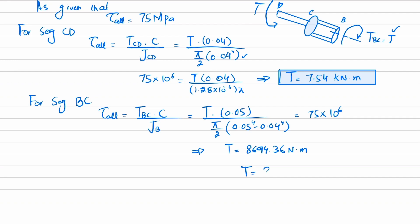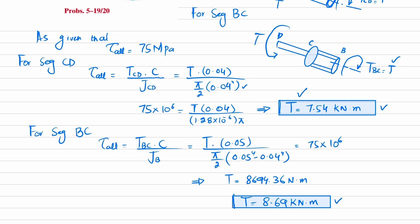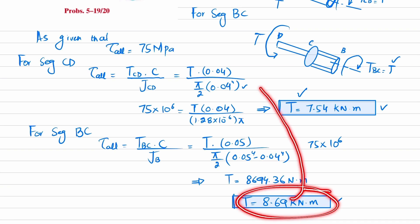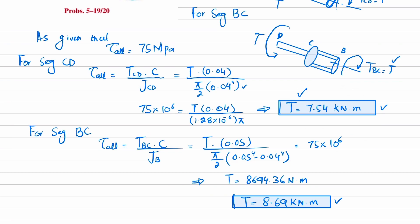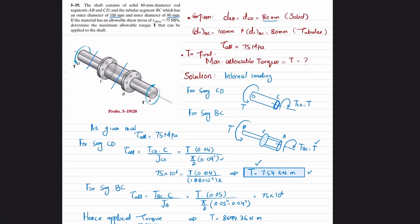This equals 8.69 kilonewton meters for the hollow section. We must apply one torque to the whole system, so we choose the smallest value. If we choose the larger value and apply it to segment CD, the allowable shearing stress would be exceeded. The smaller value satisfies both conditions. Therefore, the applied torque is 7.54 kilonewton meters.